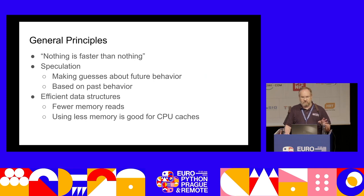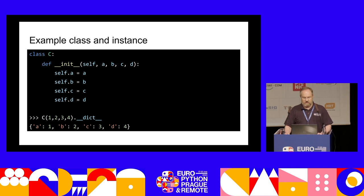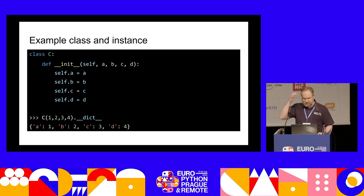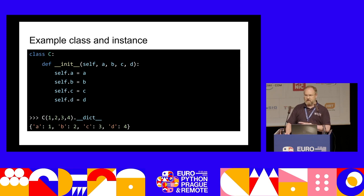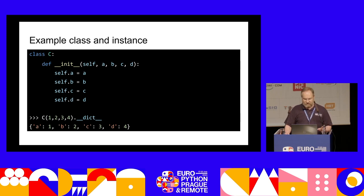I'll start with efficient data structures, then move to speculation. Let's consider a simple Python object with four attributes — an initializer that sets those four attributes. If we grab the dunder dict out of it, we get a dictionary showing those four attributes. This is just an archetype example to show how it's laid out in memory.